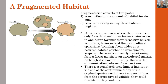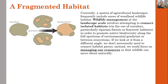Currently, a matrix of agricultural landscape frequently includes areas of woodland wildlife habitat. Wildlife management at the landscape scale involves attempting to connect isolated habitats via the use of corridors — particularly riparian forests or fence-road habitats — in order to promote native biodiversity along the full spectrum of environmental regions or between ecosystems.